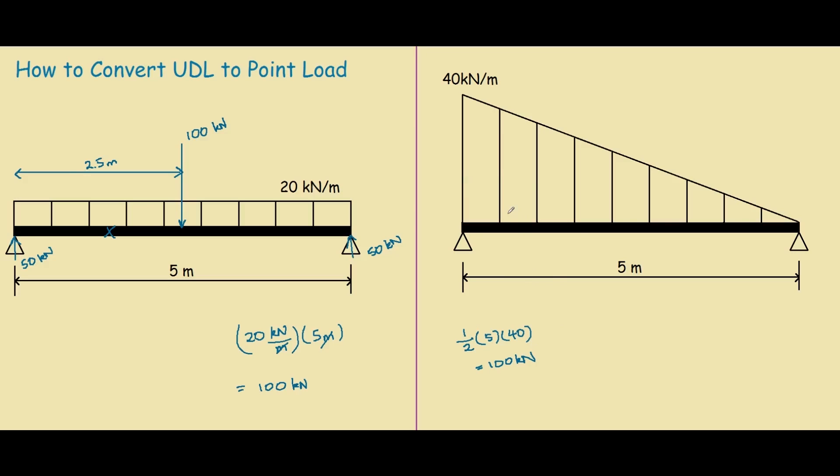For a triangular UDL, the point load centroid is actually slightly different to the rectangular one. As you can see, the UDL is more heavy sided on one side. And it actually works out that the centroid is one third from the heavy side.